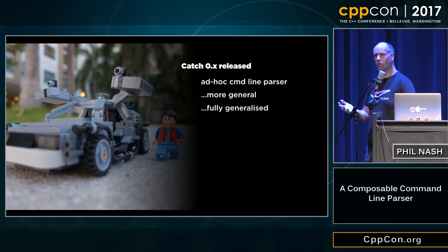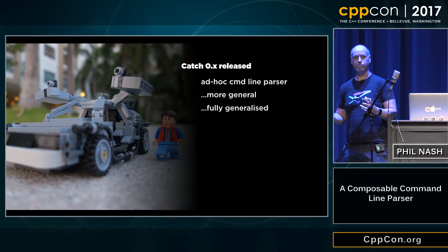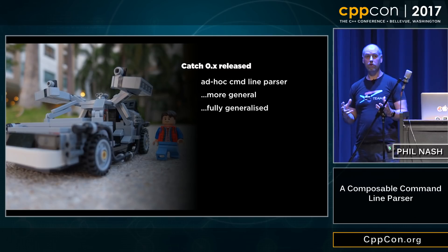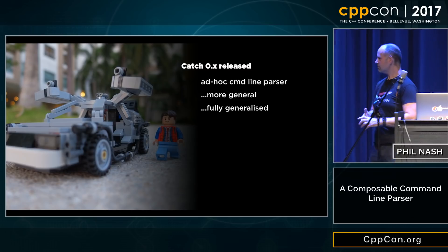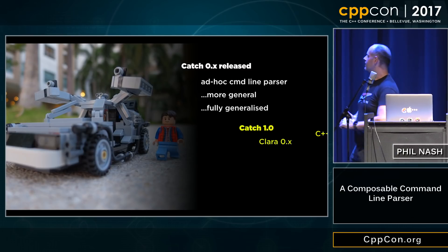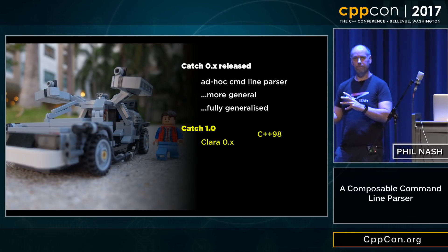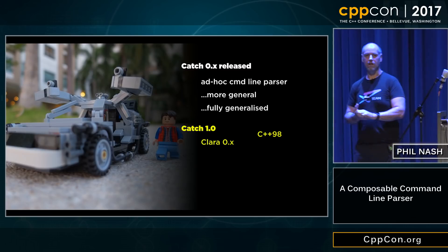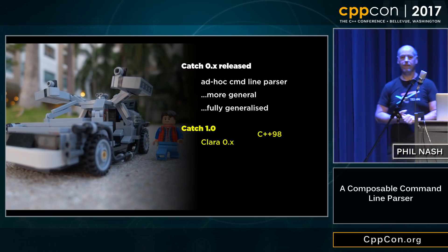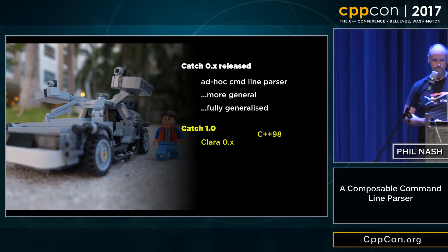To the point that I actually found that I had a library within a library — so even the libraries were composable. What I did was I split that library out, called it Clara for Command Line Argument Arranger, and put that up on GitHub as a separate library.